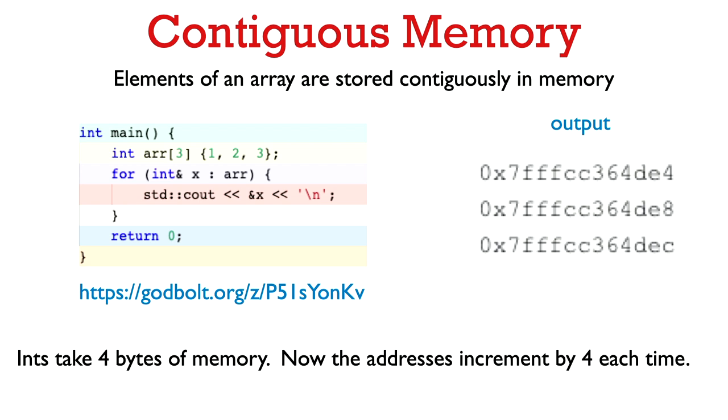Let's look at the same example, but now using ints instead of Booleans. Each int takes four bytes of memory. Now if we look at the output of this program, we see that the addresses are incremented by four each time — just look at the last hexadecimal digit going from four to eight to C. So these elements are being stored contiguously in memory.